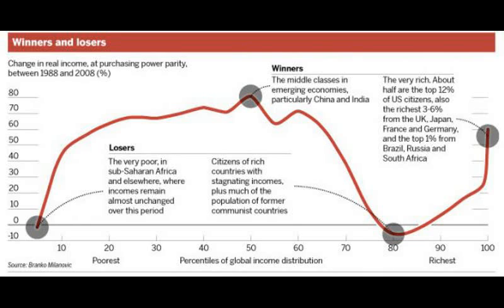The first data point worth noticing is the tail of the elephant. These are the world's poorest people, who are still more or less disconnected entirely from the modern economy, though they've had a rough time of things.